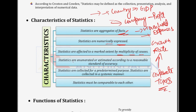Moving on, statistics are enumerated or estimated according to a reasonable standard of accuracy. An important point here is that statistics can never be considered 100% accurate, because there are different methods to calculate them and it depends on which entity or researcher is using which method. That is why we consider that statistics are not entirely accurate — you cannot count on 100% accuracy. However, they maintain a standard of accuracy. Statisticians usually set a standard, saying their calculated results would be 95% accurate. They work in ranges of accuracy, never entirely 100% accurate.